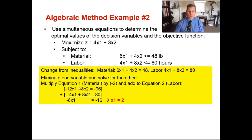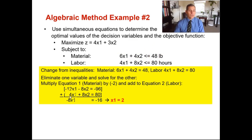We're going to eliminate one variable and solve for the other. I'm also going to multiply by negative two and add it to equation number two, which is labor. So we get negative 12x1 minus 8x2 equals negative 96 — taking negative 2 times 6 is negative 12, negative 2 times 4 is negative 8, and negative 2 times 48 is negative 96. Equation two stays the same. We now have negative 8x1 equals negative 16, which gives x1 equals 2.